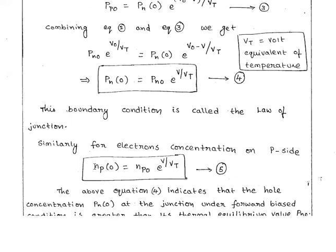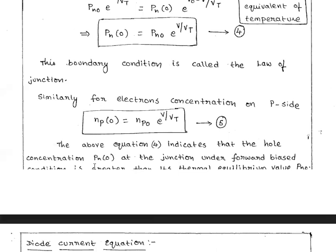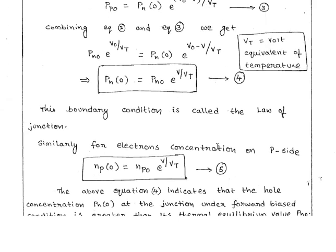Similarly, for the electron condition on the p-side: electrons in the p-side at zero distance equals the equilibrium electron concentration in the p-side into e power (V / Vt). This equation indicates that the hole concentration pn(0) at the junction during forward bias condition is greater than its thermal equilibrium value pn0.